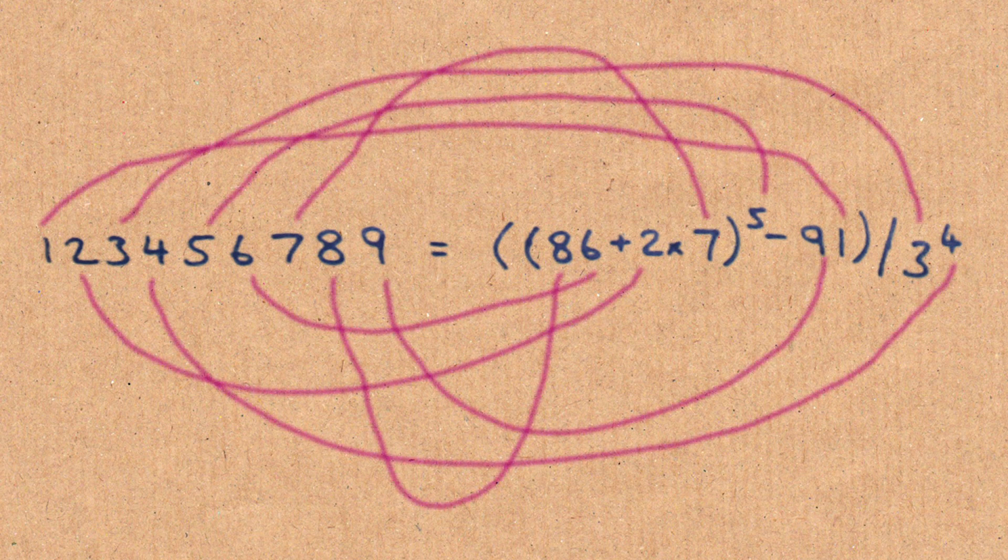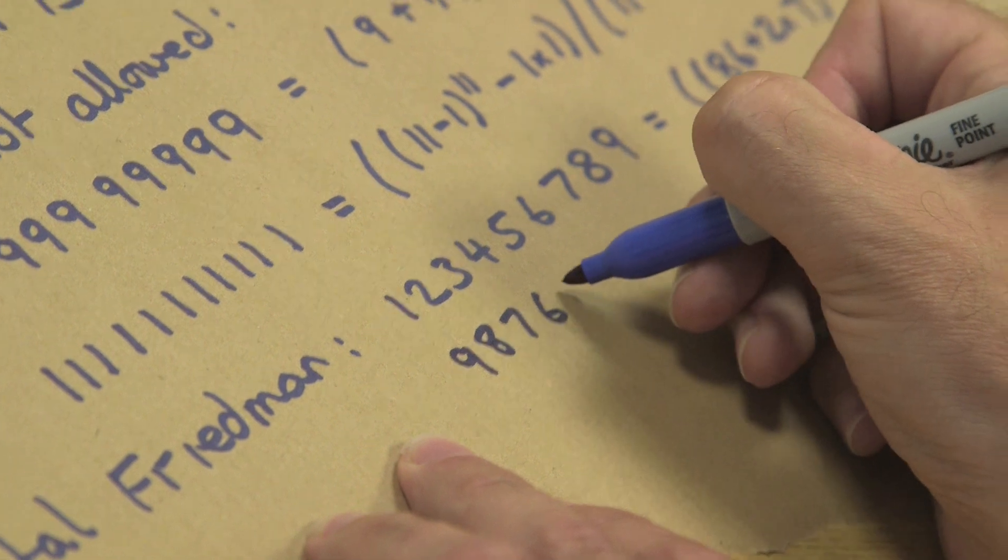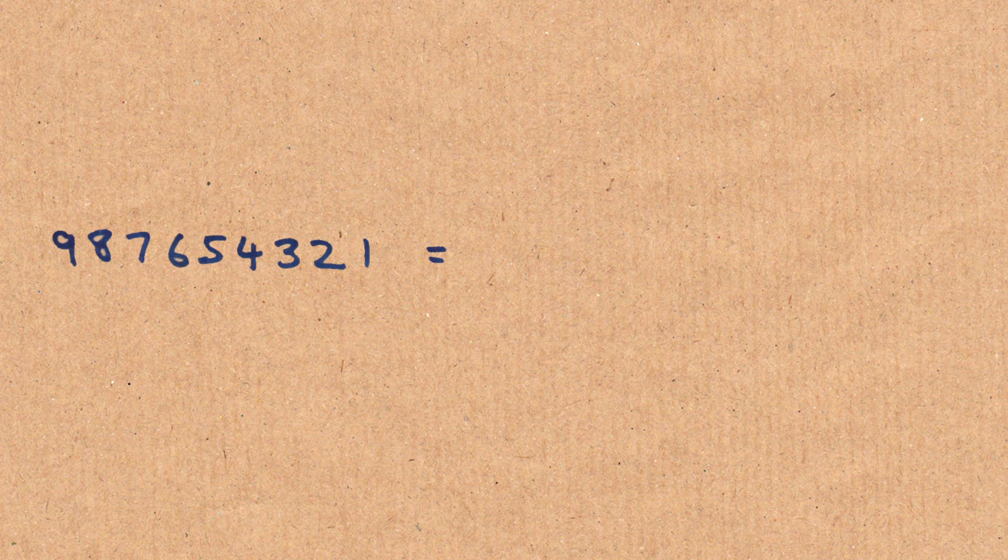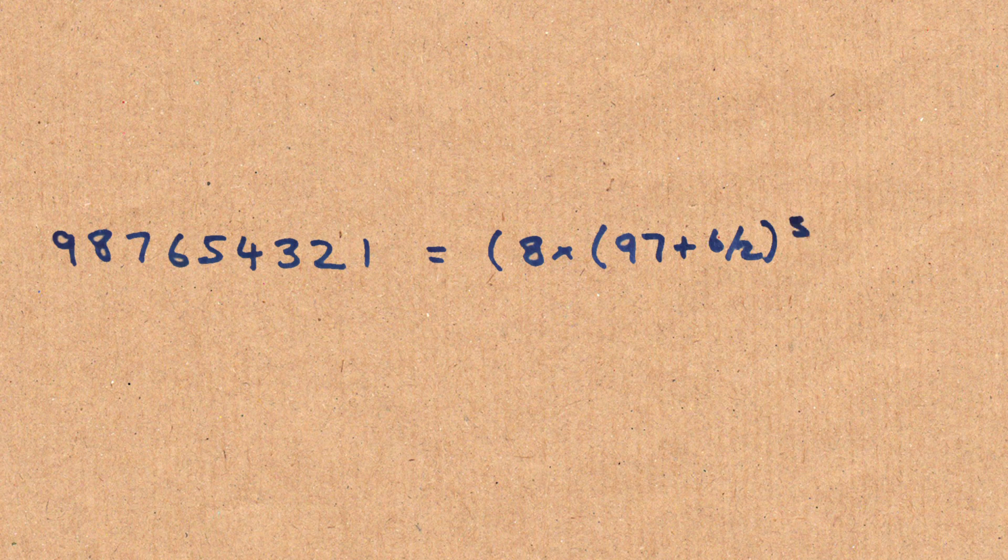So that's one pan-digital number. We can do another one. 987654321. And this is 8 times 97 plus 6 over 2 to the power 5 plus 1, again, divided by 3 to the power 4.